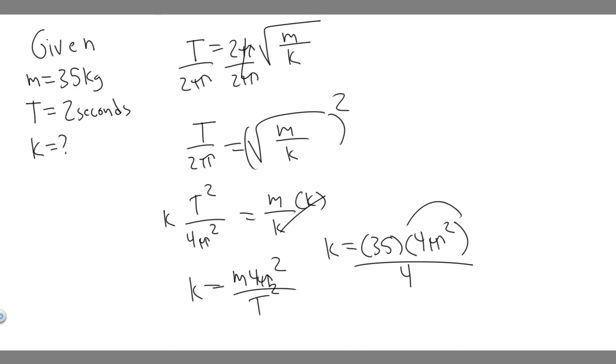So essentially, it's just 35 times 4π squared, and then divide it by 4, because it's t squared. Just do k, do all this. And then you're going to get 1381.7446 and so on, and then divide it by 4. So if you go ahead and do this, you're going to get k equals 345.436154.